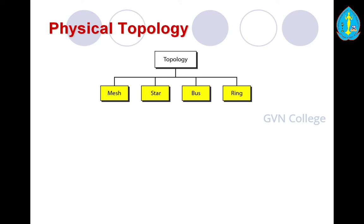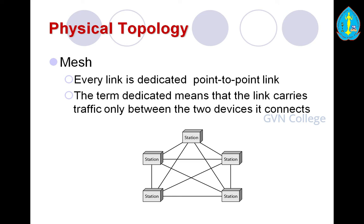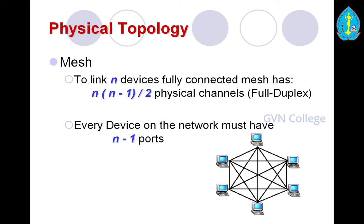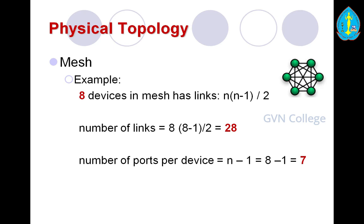The first topology is mesh topology. Every link is a dedicated point-to-point link, meaning the link carries traffic only between the two devices it connects. In a fully connected mesh topology with n devices, the mesh has n × (n−1) / 2 physical channels and every device must have n−1 ports. For example, with 8 devices: number of links = 8 × (8−1) / 2 = 28 links, and number of ports per device = 8−1 = 7.